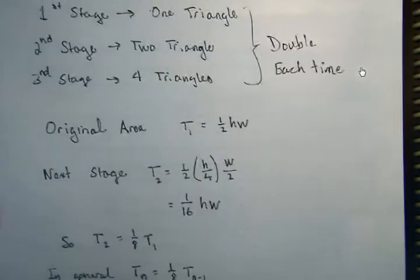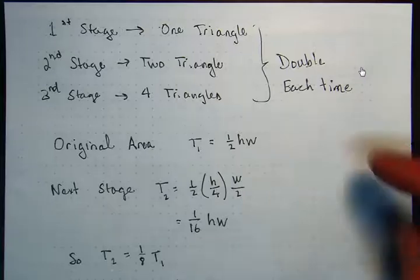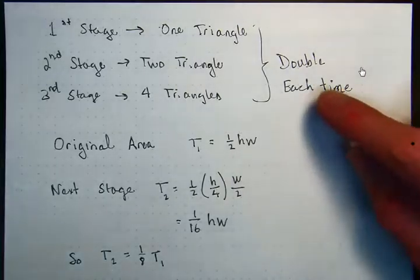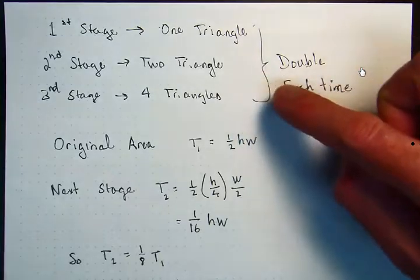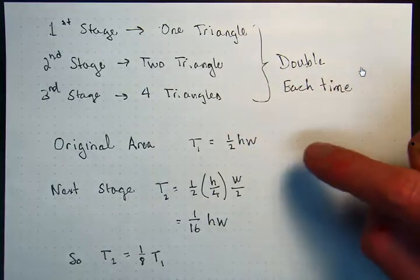I do want to talk about how many triangles we would have at each stage. So the first stage, there would be one triangle. The second stage, there would be two triangles. The third stage, there would be four. So each time we do this, we're going to double the number of triangles that we're adding. So next stage after that, the fourth stage, we would have eight triangles.